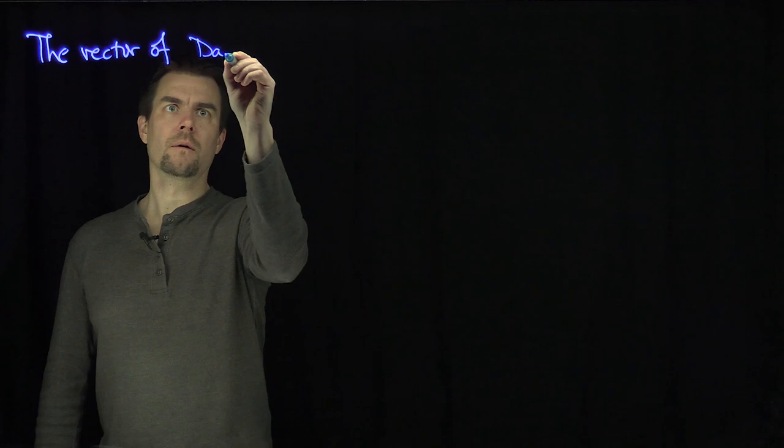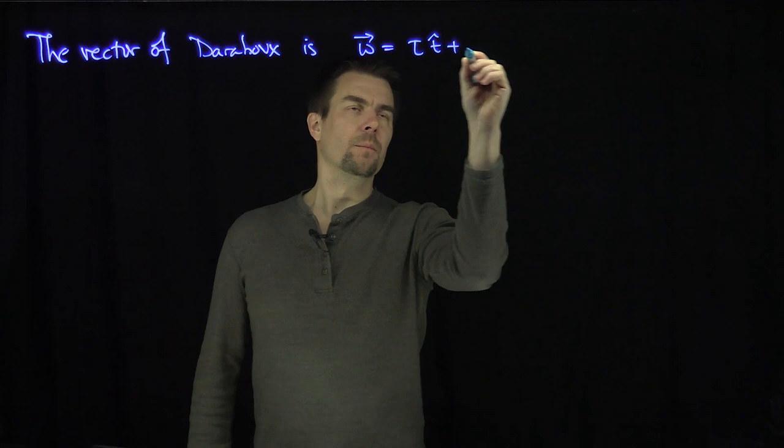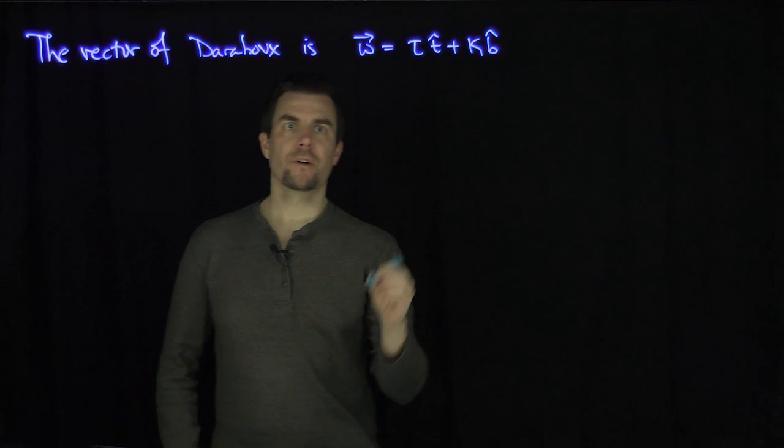Hello students. In this video we'll discuss the Darboux vector. The Darboux vector — or Darboux if you're French — is omega, which is the torsion τ times t̂ plus the curvature κ times b̂. This is called our Darboux vector.